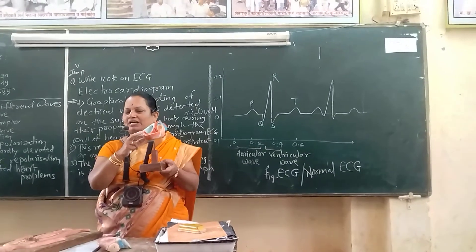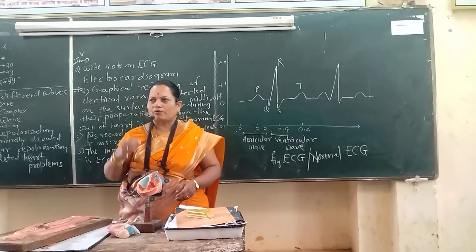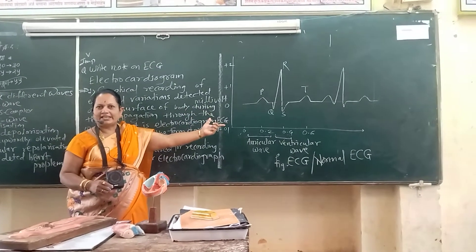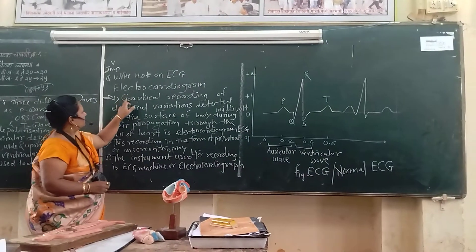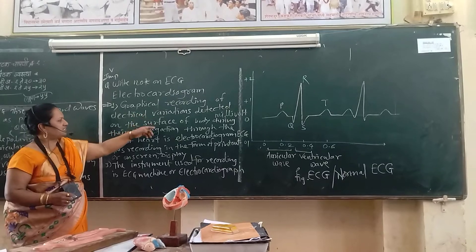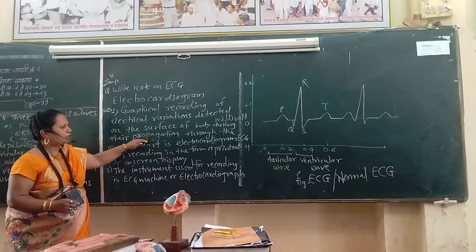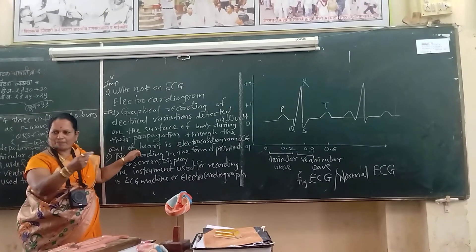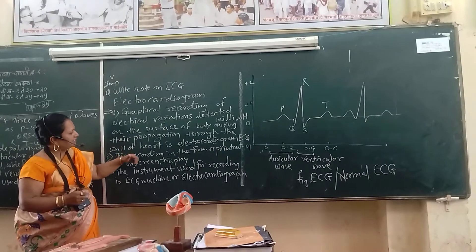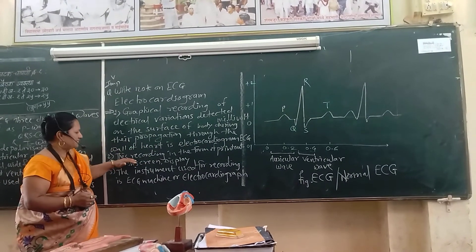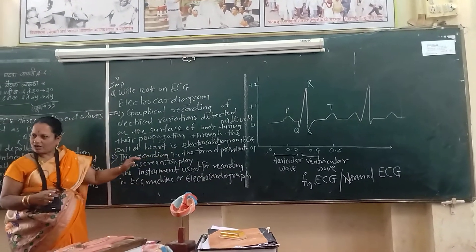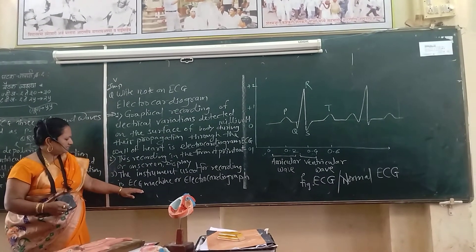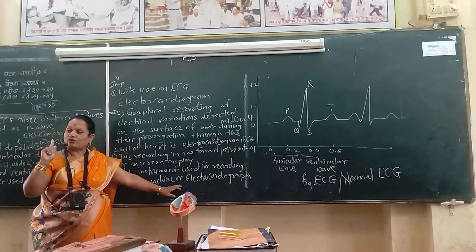That pumping action of the human heart is recorded in the form of waves on graph paper — that is the electrocardiogram, or ECG. It is a practical recording of electrical variations detected on the surface of the body during propagation through the wall of the heart. When a wave of contraction propagates through the wall of the heart, it is detected and represented on the ECG. This is recorded as a printout or on a display screen, using the ECG machine.